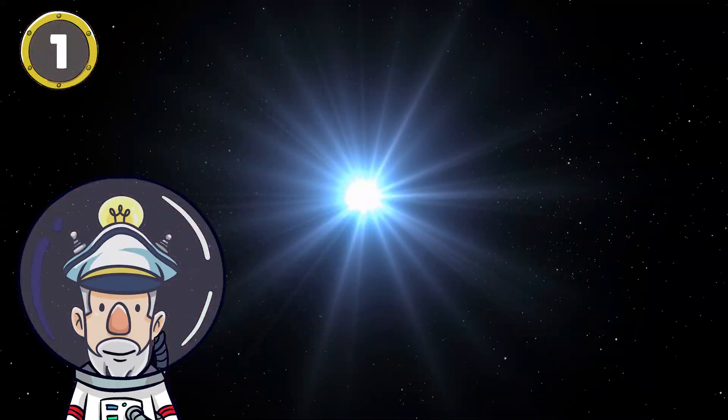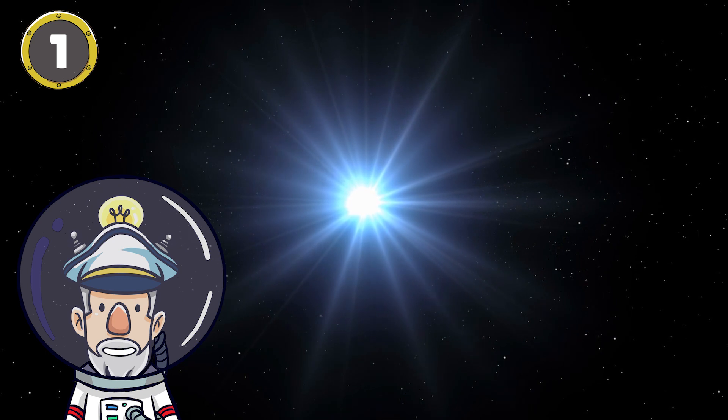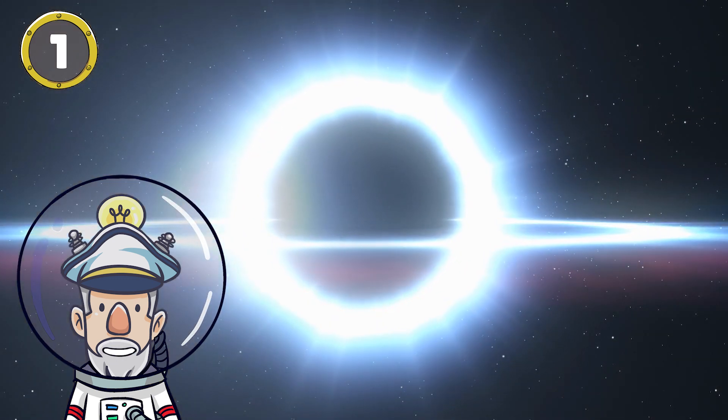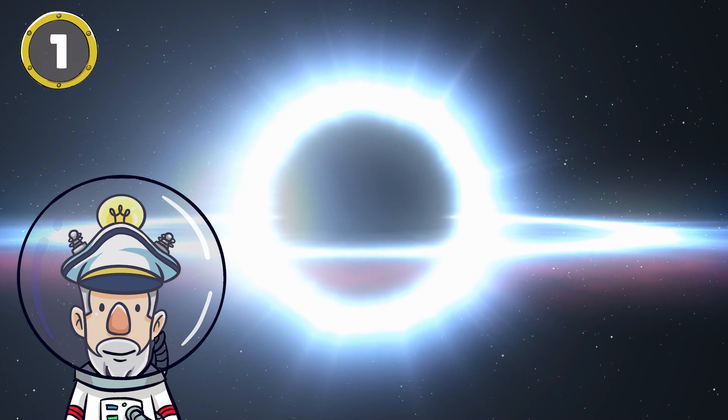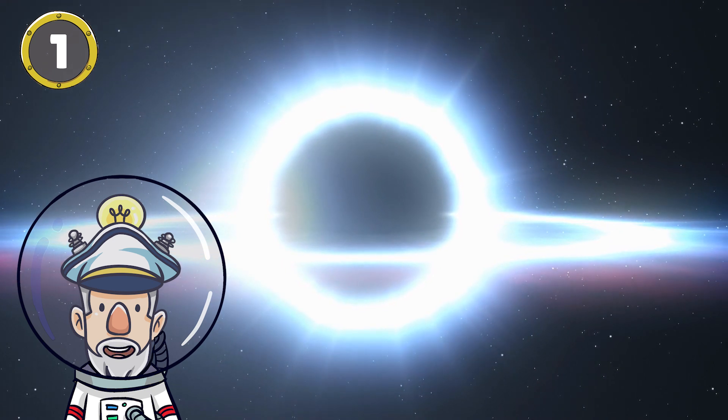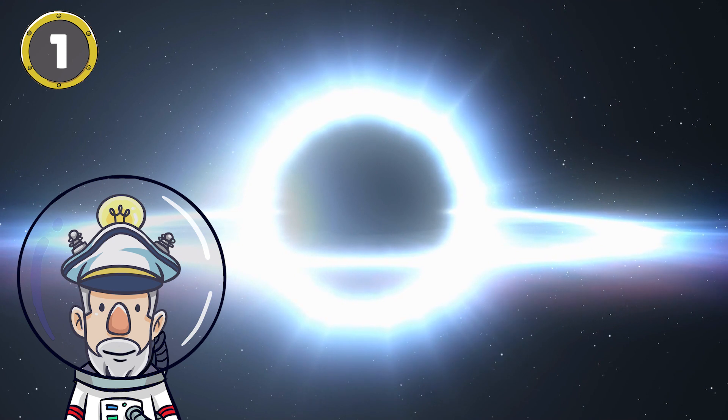Number 1: Black holes used to be stars. When they run out, one of three things happens, mainly depending on its mass. The star will either transform into a white dwarf, a neutron star, or a black hole.